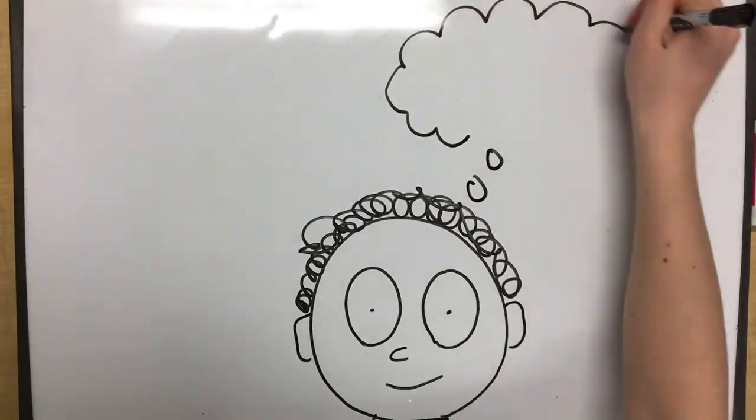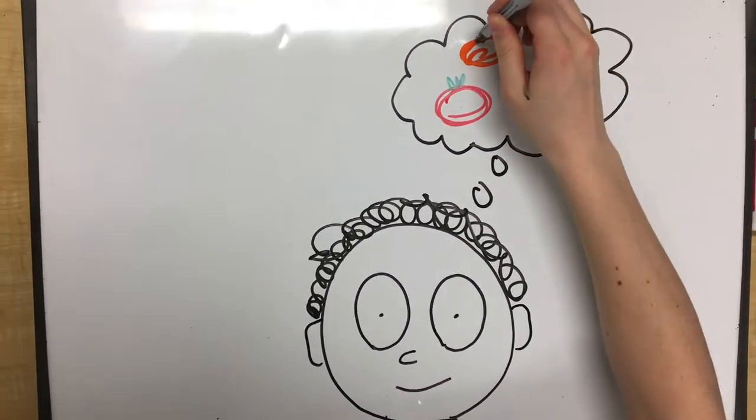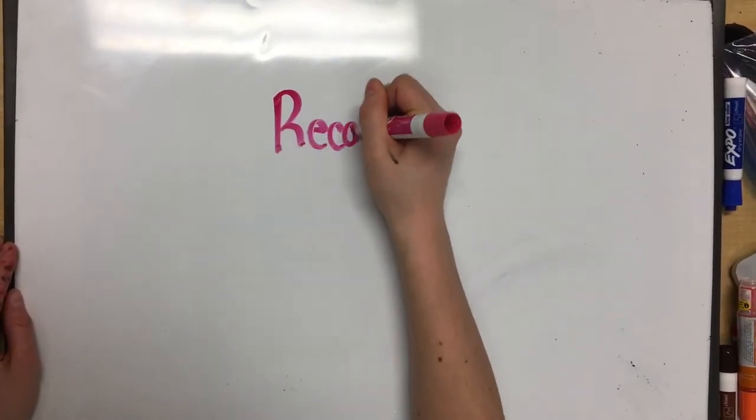So now that we know that scurvy can be combated by the ingestion of fresh foods and meats, how much of those things do we need to hit our necessary daily intake? It's not as hard as you may think.